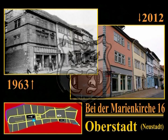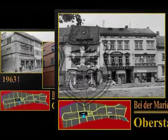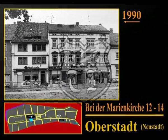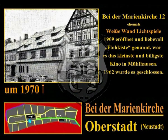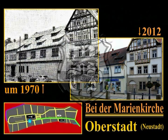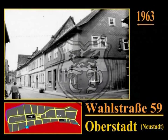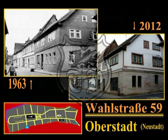Der südliche Teil der Straße bei der Marienkirche ist die Verlängerung des Steinweges bis zur Herrenstraße; nördlich der Marienkirche verbindet sie die Holzstraße mit dem Obermarkt. Als Contra Exclesiam Beatae Virginis (zu Deutsch: gegenüber der Kirche der Heiligen Jungfrau) wurde sie im Jahre 1418 erstmalig erwähnt. Das Haus bei der Marienkirche 12 war bis Anfang der 1960er Jahre eine gefragte Adresse; hier befand sich das Lichtspielhaus Weiße Wand, 1909 eröffnet und liebevoll 'Flugkiste' genannt – das kleinste und billigste Kino in Mühlhausen, 1962 geschlossen. Bevor uns der Weg weiter Richtung Westen in die Herrenstraße führt, machen wir einen kleinen Abstecher die Marktgasse hinab zur Wahlstraße, erstmals erwähnt 1376; ihr Name stammt von den Wallonen, einer Volksgruppe aus dem südlichen Belgien, die sich hier ansiedelten.